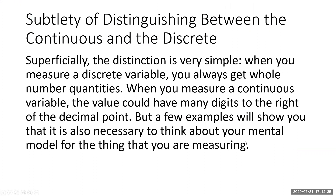Superficially, the distinction is very simple: when you measure a discrete variable you get whole number quantities, and when you measure a continuous variable the value could have many digits to the right of the decimal point. But a few examples will show that it's also necessary to think about your mental model for the thing that you are measuring.